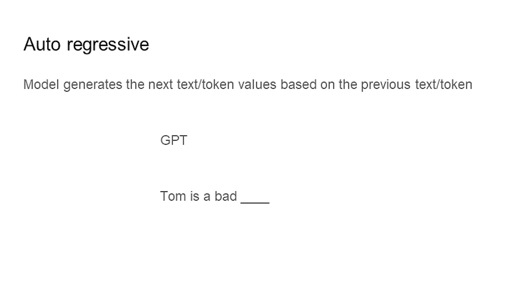An auto-regressive model utilizes previous predictions to generate new tokens. For example, given 'Tom is a bat' as input, it tries to predict whether the next token is a cat, a human, or a dog. GPT, like all generative AI, is prone to hallucinating — producing facts that were not present in the training dataset.